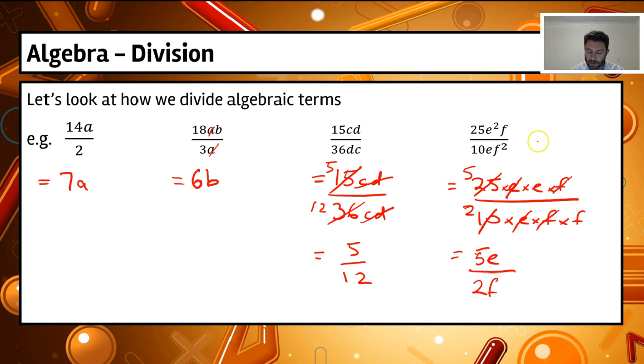Now with this one here, if we wanted to actually look at a quick way, we would be able to do the cancelling as we've done there with the 5 and the 2. So we'd be left with 5e. But then e squared and e, basically what we're doing is we're cancelling out one of the e's in that power. So e times e and we're cancelling out with an e.